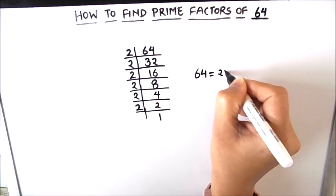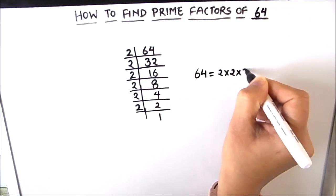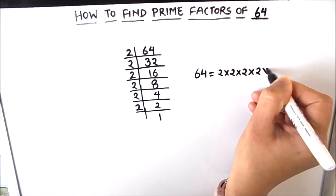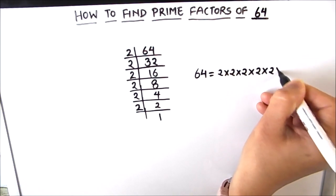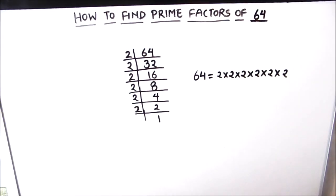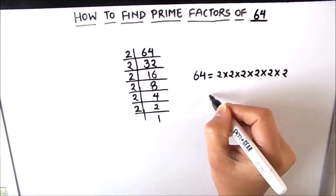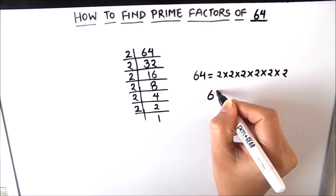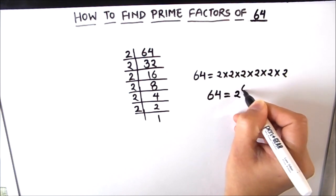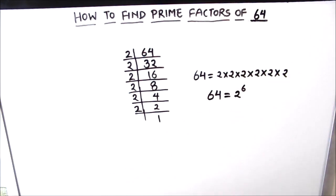So now we have the prime factors of 64 as 2 times 2 times 2 times 2 times 2 times 2. In exponential form, we can write the factors of 64 as 2 raised to the power 6.